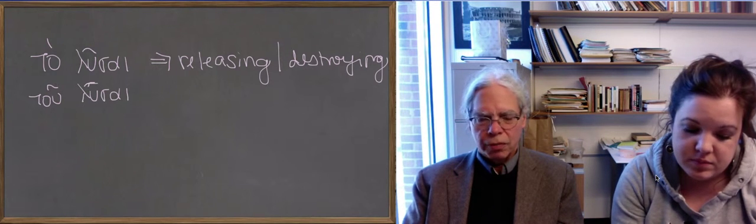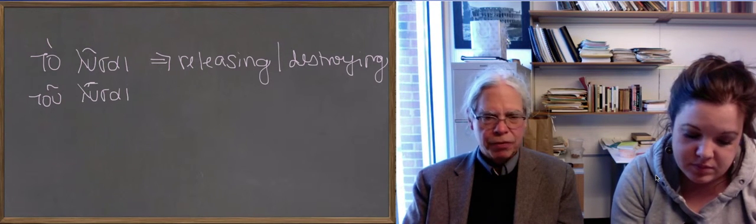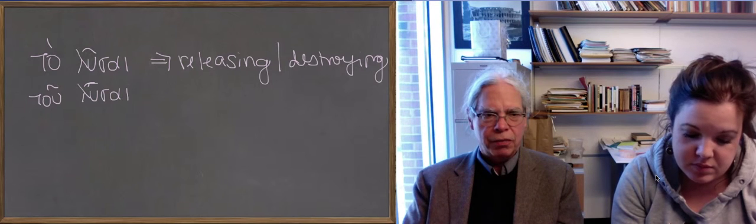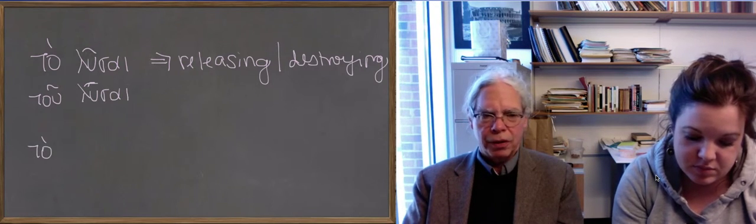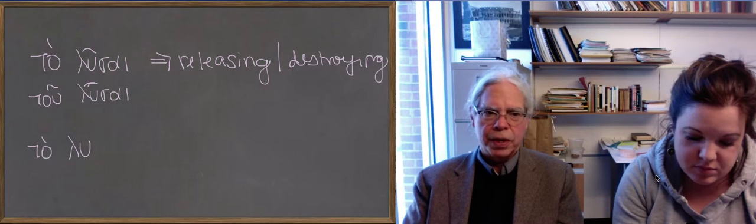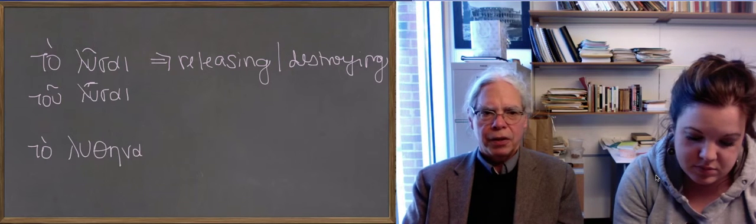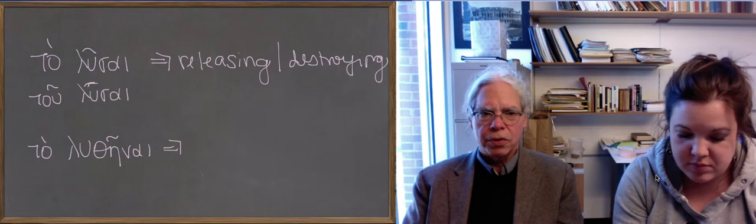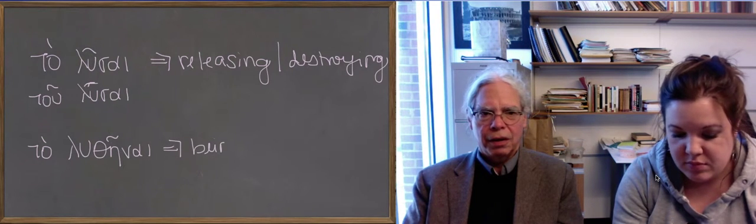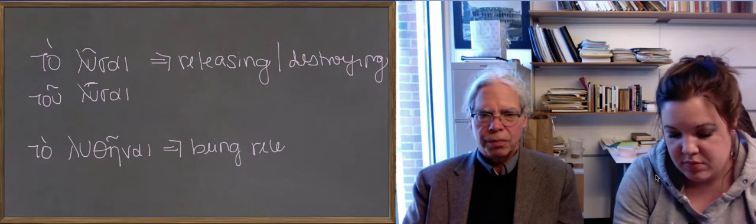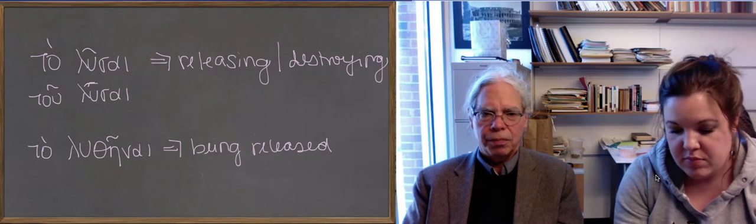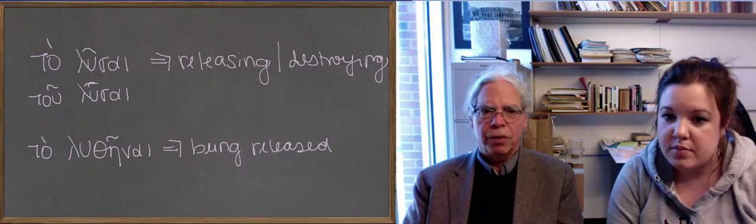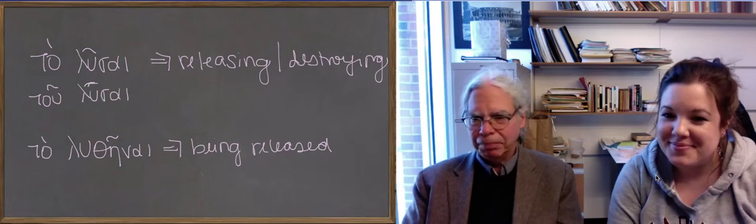You can do it with passive infinitives as well as active ones. So the passive infinitive of luo is, of the aorist of luo, is ta, lu, thei, nai. That's going to mean being released. A noun, as in being released from prison was a joy.